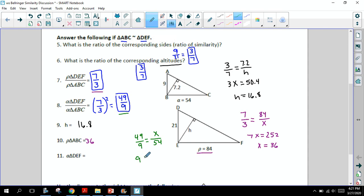So product of the means equals the product of the extremes. Yet one more time, nine X is equal to 49 times 54 is 2,646. When we divide by nine, the X value here ends up equaling 294. So the area of DEF is 294.